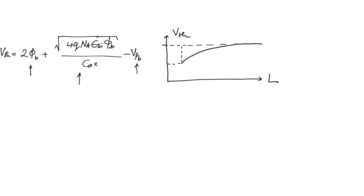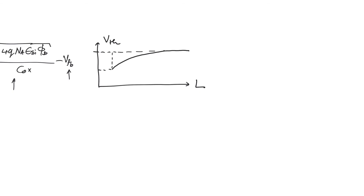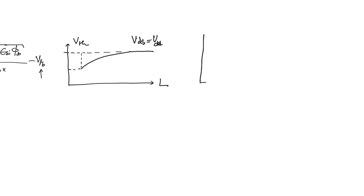This phenomenon is part of a group called short channel effects, one of which is velocity saturation, which we have already discussed. However, looking at the V_threshold vs. L graph is a bit misleading — in reality, this graph represents a dependence of threshold voltage on drain potential, not channel length. This is most evident when V_ds equals V_dd. If we plot V_threshold versus V_ds, we notice that the higher the V_ds, the lower the V_threshold.